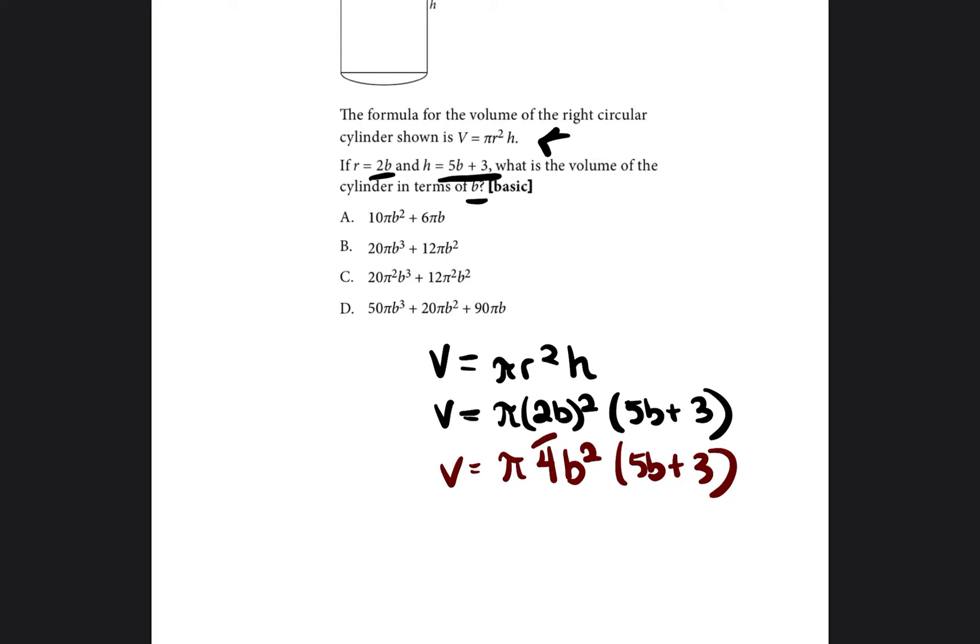So now we're going to take this whole value and we're going to distribute to the 5b and we're going to distribute to the 3. What that means is we're going to multiply that whole value by 5b and then we're going to multiply that whole value by 3.